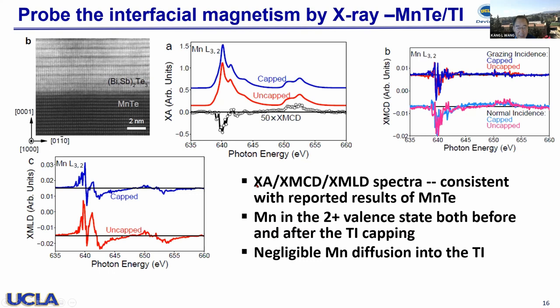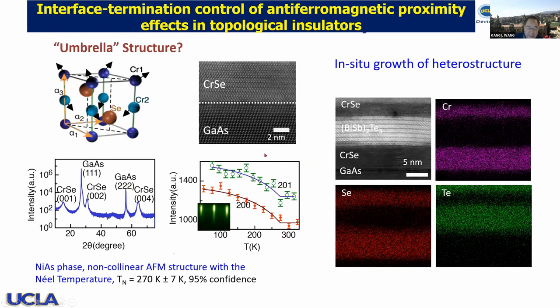Moving forward, we look at another kind of AFM structure. In this case we look at chromium selenide. We can grow this on top in the MBE chamber on gallium arsenide, and grow the magnetic doped TI on top of that surface. The AFM structure of chromium selenide is an umbrella structure, antiferromagnetically coupled to the second layer below. The interface shows decent quality in terms of intermixing, and the Néel temperature is relatively low, around 200-something K.